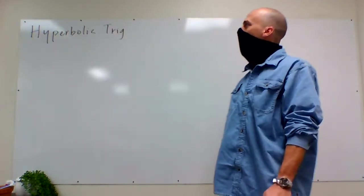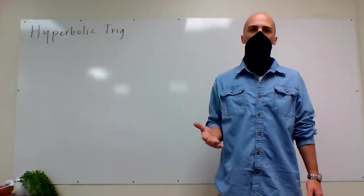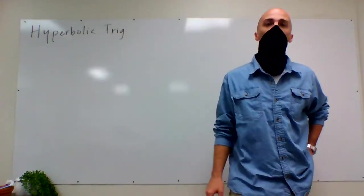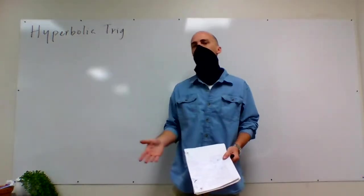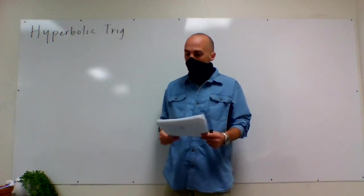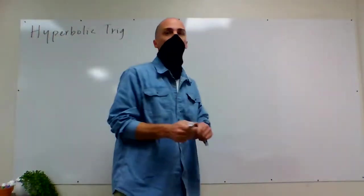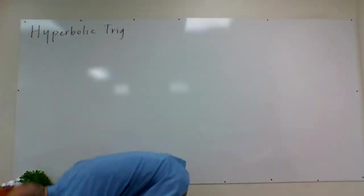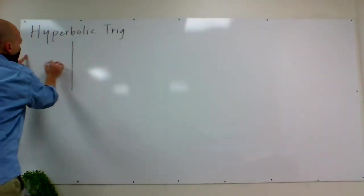I took a question last time on hyperbolic trig — what even is sinh and cosh — and I realized it's not something we really address in standard math classes, so I might as well address it here. I'm not going to include this in the multivariable calculus playlist because there's not really any calculus or multiple variables. So I'm going to start off telling you about what you already know: circular trig, regular cosine and regular sine. Let me draw you the diagram.